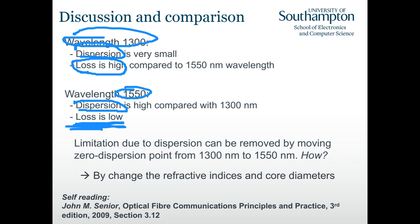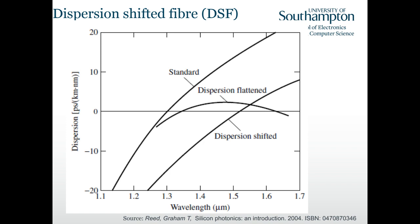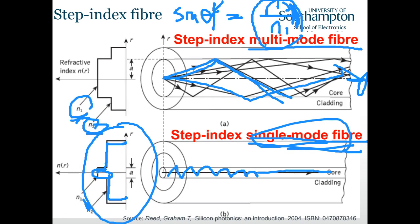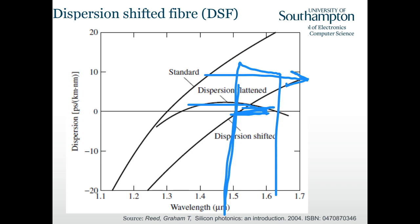To use the low-attenuation long-wavelength band while keeping dispersion low, we can shift or flatten the dispersion curve through doping — changing the core and cladding refractive index profile. This gives dispersion-shifted or dispersion-flattened fiber designs.